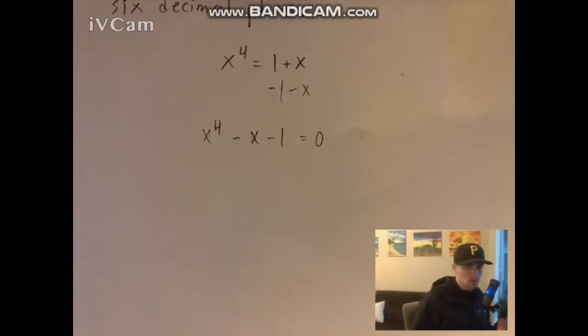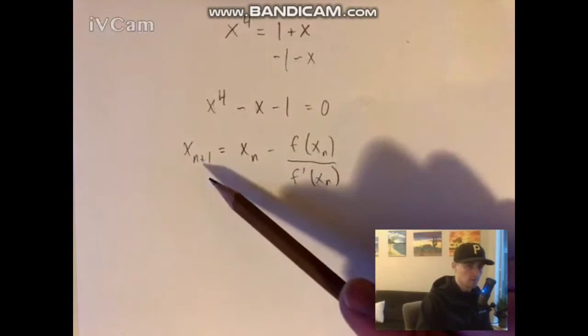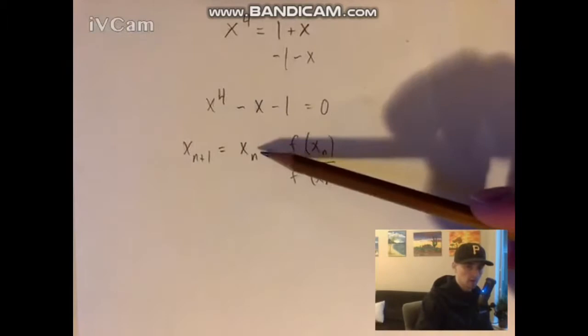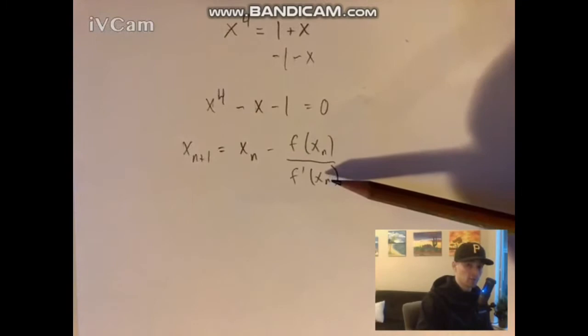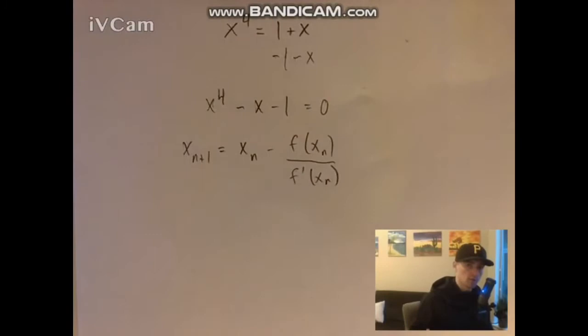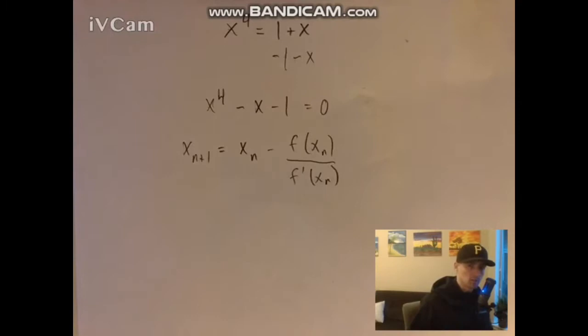The place we want to start is the formula for Newton's method. It says to find our (n+1)th estimate, we need our x sub n — our nth estimate — and then subtract f(x sub n) divided by f prime(x sub n). That gets us a little bit closer to the next best estimate for the root. The easiest way to do these problems is to set up a table, figure out these pieces one by one, and iterate through the formula. Each iteration gets us a little bit closer to our estimate.